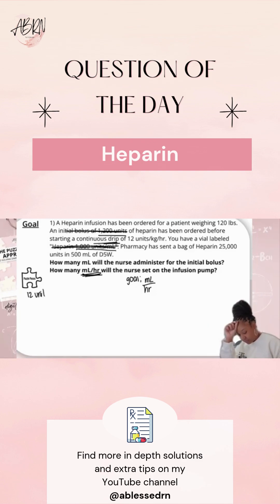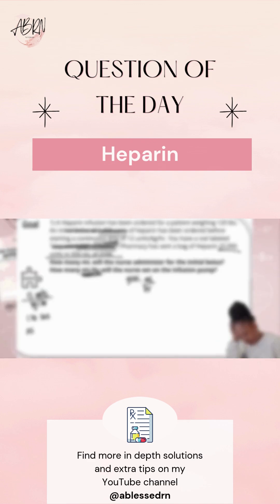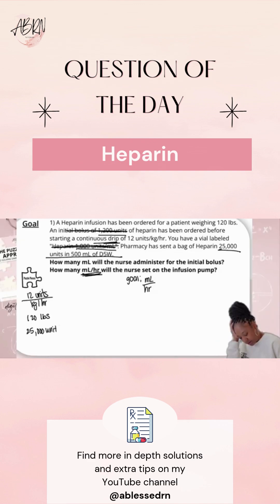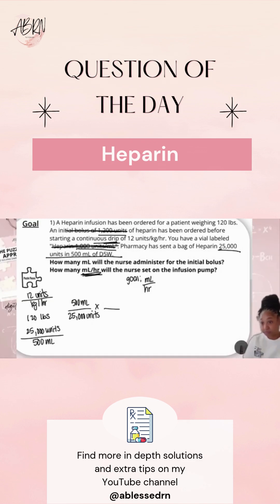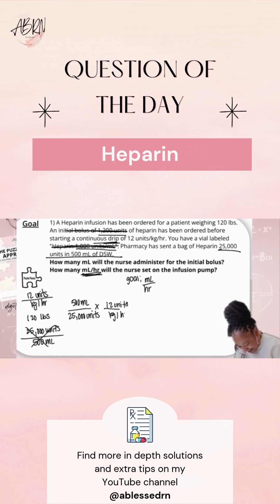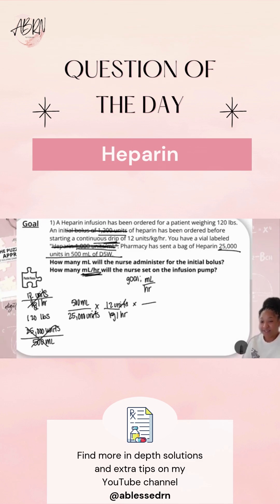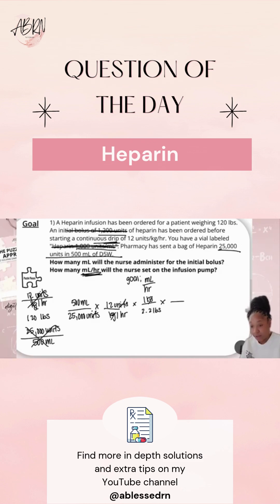Our order for the continuous drip is 12 units per kilogram per hour. Since our order uses kilograms, we need the patient's weight. We have 25,000 units over 500 mL. Now, do we have kilograms in our puzzle pieces? No, we don't — so we need to do our conversions. Conversions are important because they are your connecting puzzle pieces when you don't have what you need.